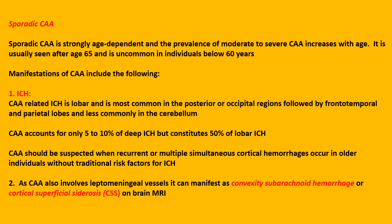Manifestations of CAA include the following. Number one: intracranial hemorrhage. CAA-related intracranial hemorrhage is lobar and is most common in the posterior or occipital regions, followed by the frontotemporal and parietal lobes, and less commonly in the cerebellum. CAA accounts for only 5 to 10 percent of deep IPH but constitutes 50 percent of lobar IPH.